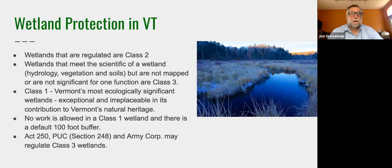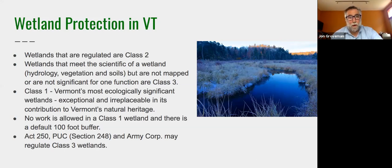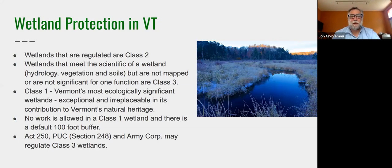Vermont may be the only state that uses this classification system. Class two means you need a permit — you're either on the map or significant for one of those functions. Class three wetlands meet the scientific definition of hydrology, vegetation, and soils, but are not on the map and not found significant for any function. The Army Corps doesn't use the classification system — they don't look at functions, values, or maps. They just look at hydrology, vegetation, soils, and how many acres of wetland are being disturbed.